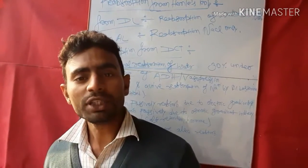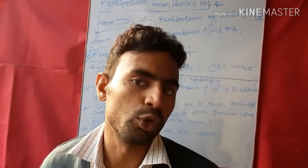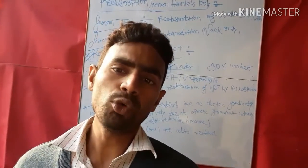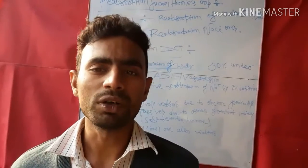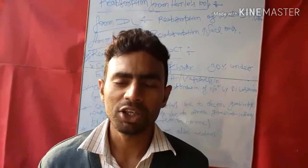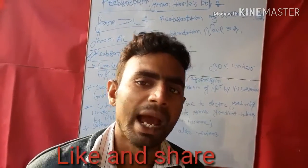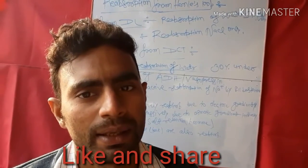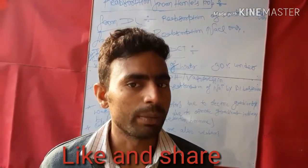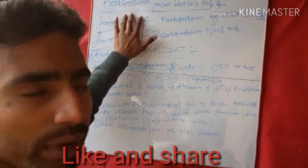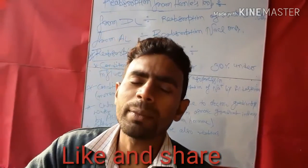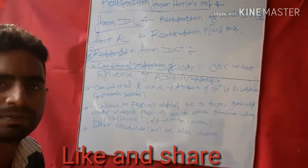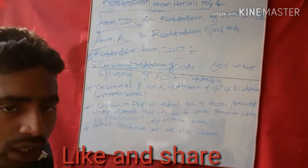Welcome back. Today's topic is reabsorption from Henle's loop, which is a part of the nephron, and the nephron is a part of the kidney. This means the nephron is the structural and functional unit of the kidney, and Henle's loop is a part of the nephron. Today we will discuss reabsorption from Henle's loop — what substances are reabsorbed from it.